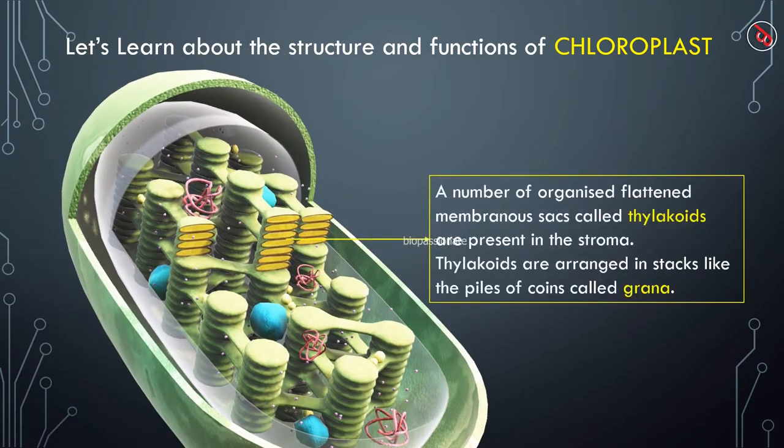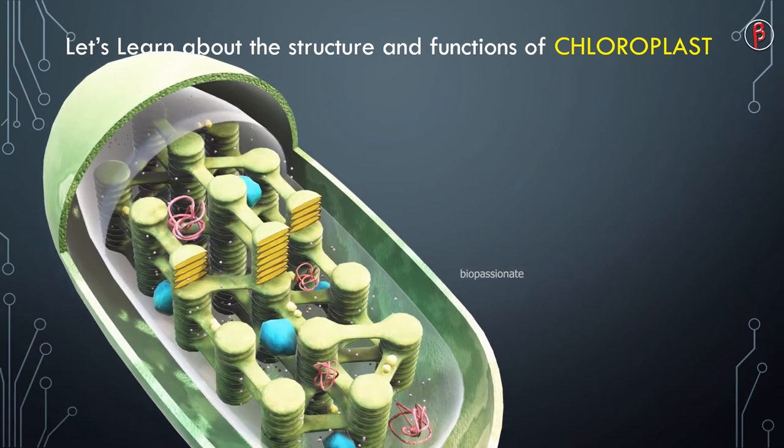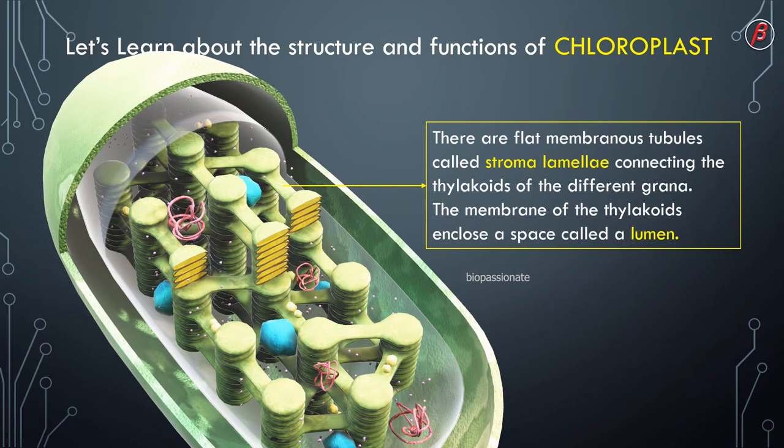A number of organized flattened membranous sacs called thylakoids are present inside the stroma. Thylakoids are arranged in stacks like piles of coins called grana. In this picture you can observe the grana like pillars which are interconnected. There are flat membranous tubules called stroma lamellae connecting the thylakoids of different grana. The membrane of the thylakoids encloses a space called lumen. These stroma lamellae are helpful to carry the chemicals between the grana.